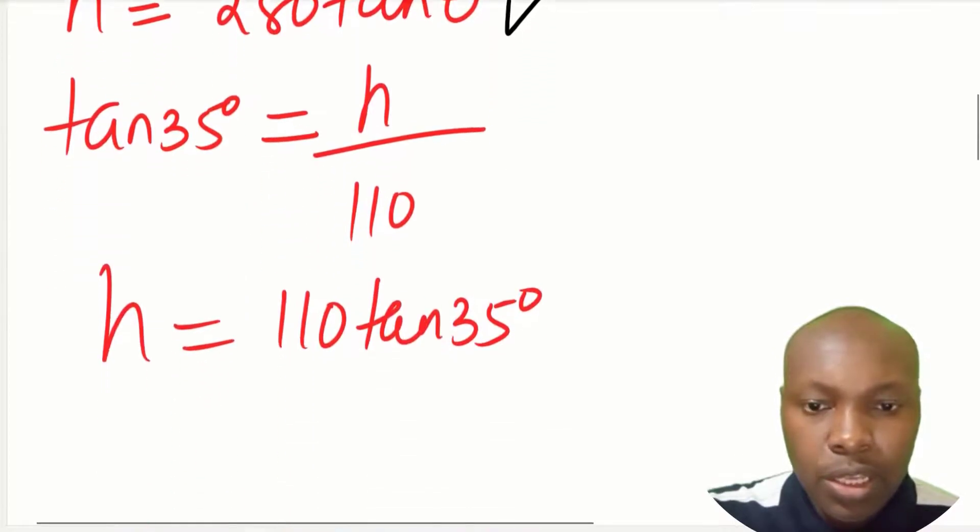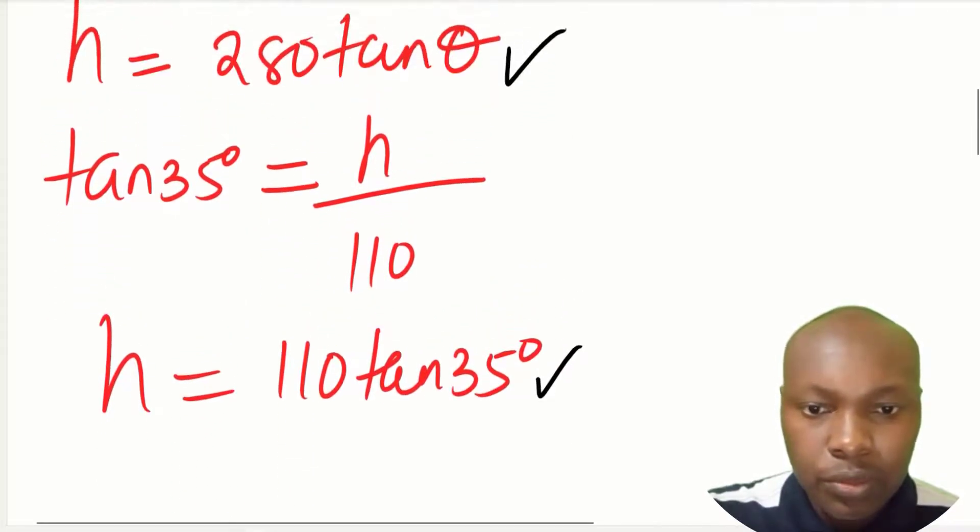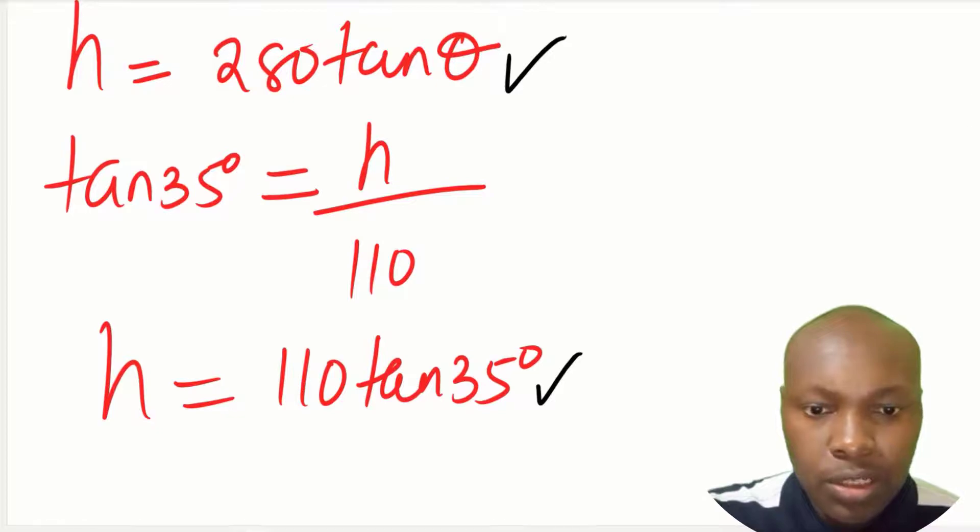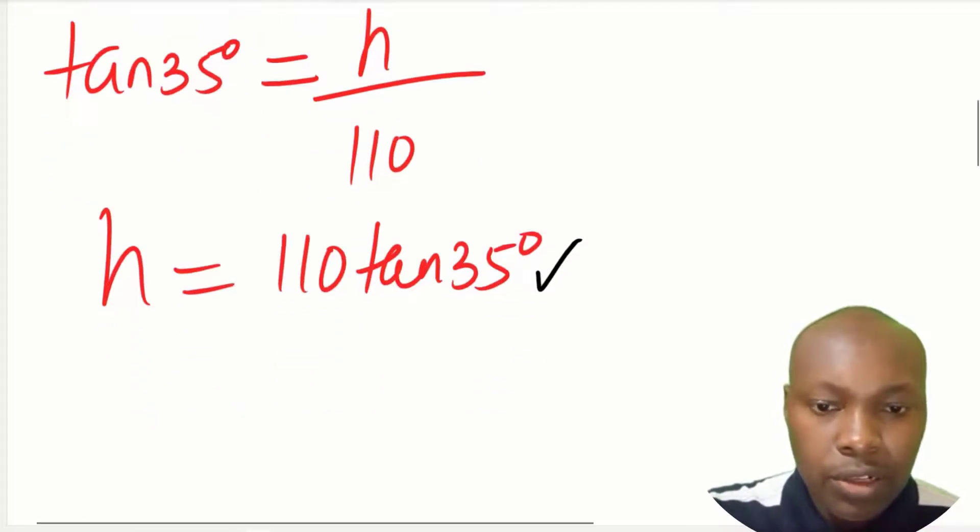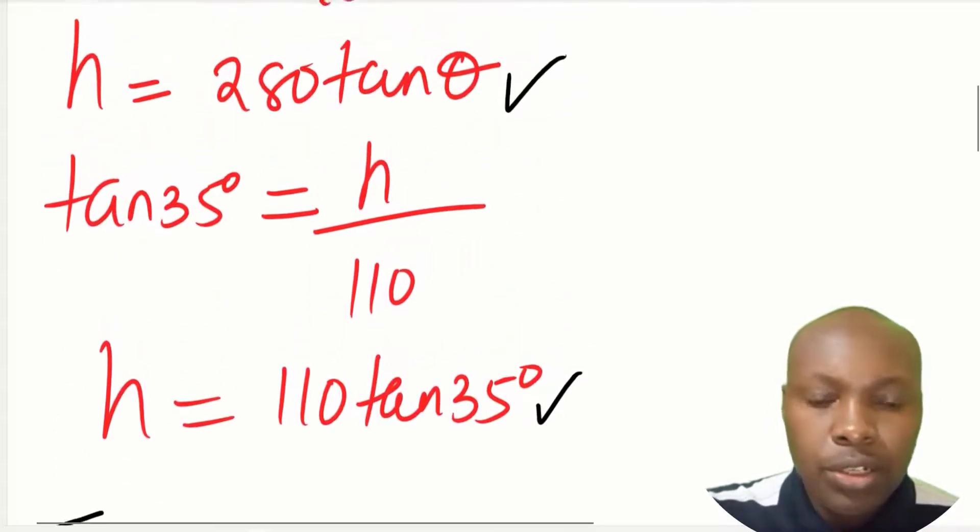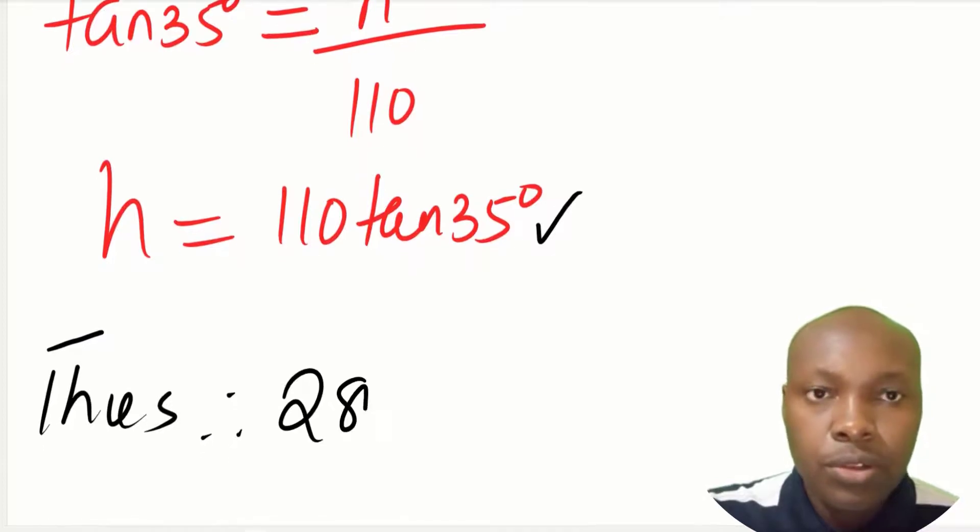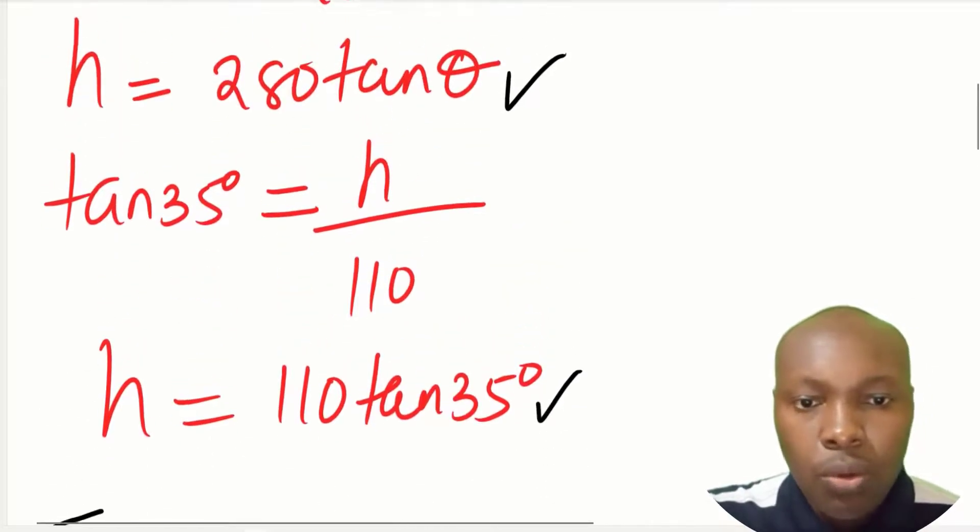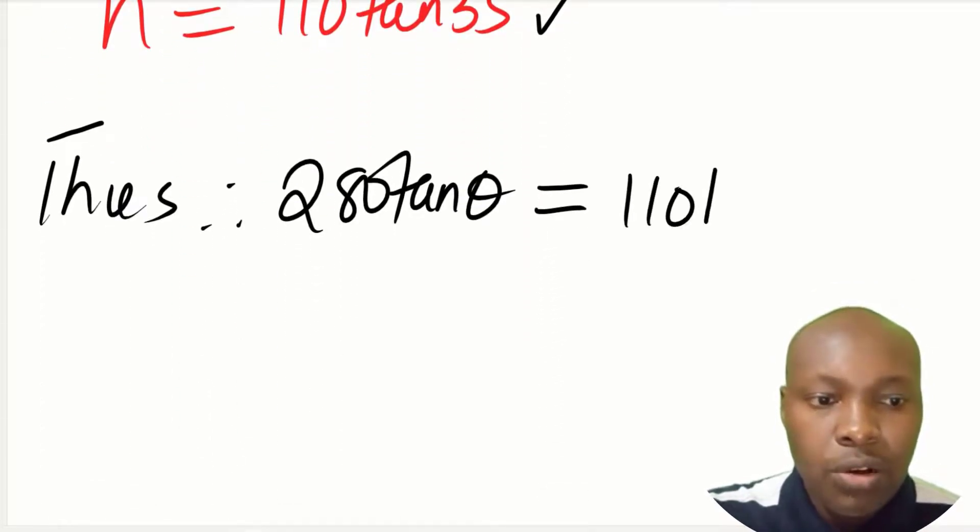So height is given by 280 tan theta and 110 tan of 35. So since that is the same expression expressing the same thing, we shall equate the two expressions of the height. So 280 tan theta is equivalent to 110 tan of 35, because both of them are expressions for the height.